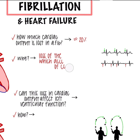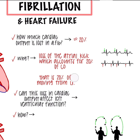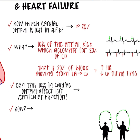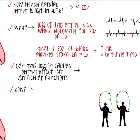So why does this happen? The lost atrial kick accounts for about 20% of your cardiac output — that's about 20% of blood that moves from the left atrium to the left ventricle that's lost. You also have increased heart rate and a decreased LV filling time.